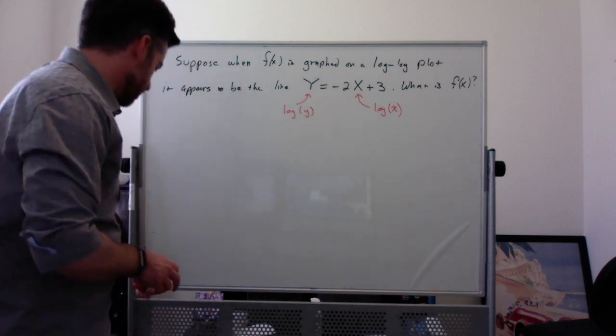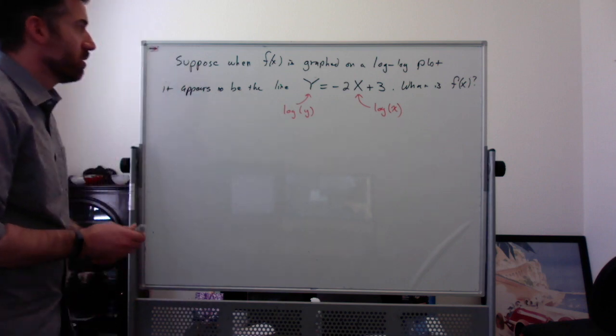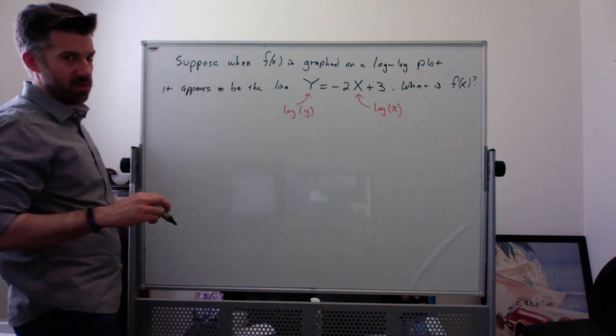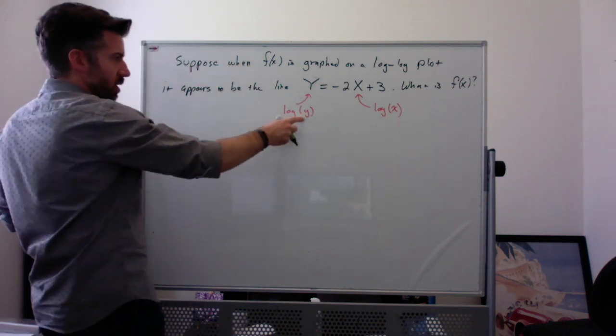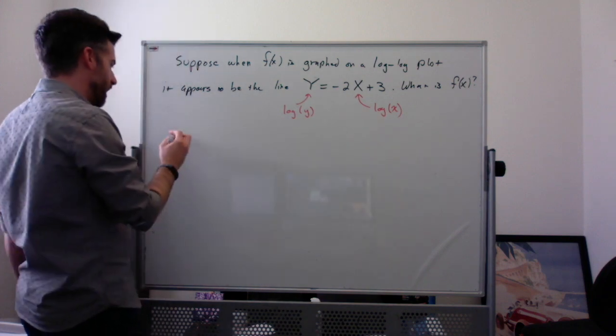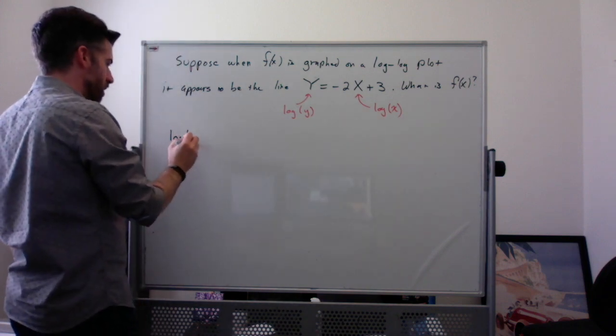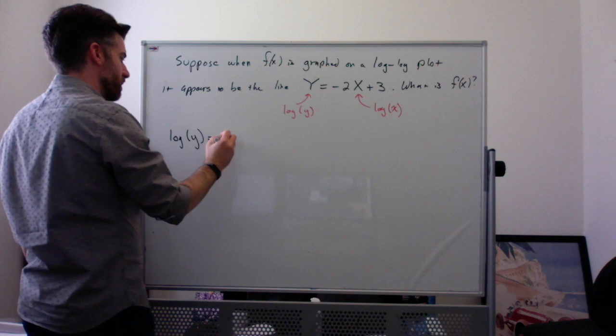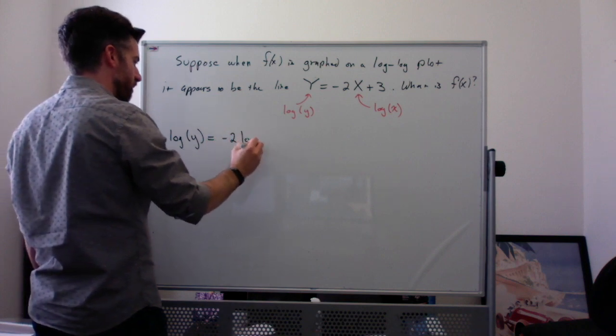The idea here is that you want to take your equation and write it in terms of the regular variables lowercase y and lowercase x. So really we have log(y) = -2log(x) + 3.